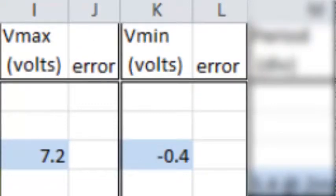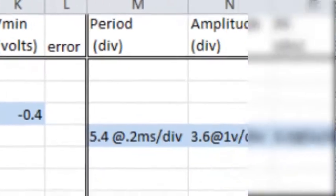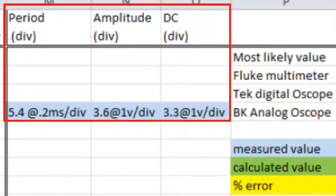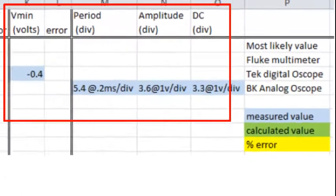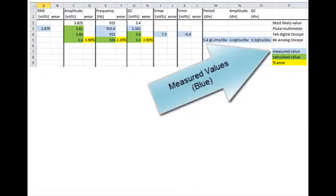Next pair of columns, voltage max and voltage min. Next three columns are period, amplitude, and DC shift, all measured in divisions for the analog oscilloscope.